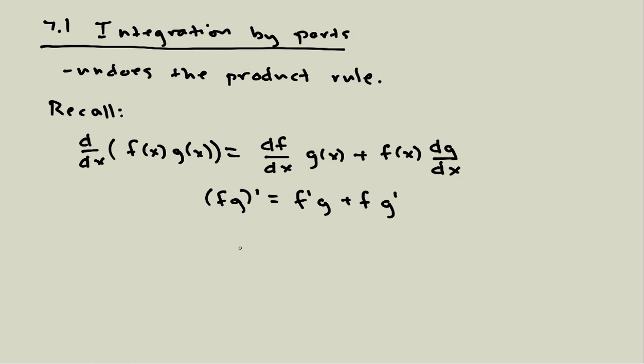So to come up with how we do integration by parts, basically we're going to take this expression and we're going to integrate both sides. So if I integrate the left-hand side, I have the integral of the derivative, and so this d by dx will just go away. So on the left-hand side, I'll have f of x g of x after I take the integral.